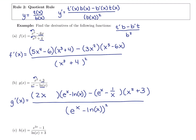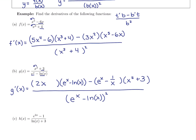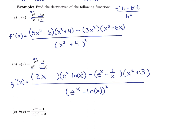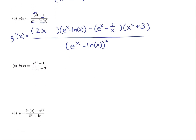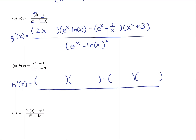Doing the four-step process and the limit definition of a derivative would take way longer than this, so this is still a shortcut. For h(x), we have x's in the top and in the bottom — it's going to be a quotient rule. Derivative of the top, original bottom, minus derivative of the bottom, times the original top, all over the original denominator squared.